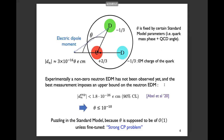For the proton EDM case, there is a similar bound, but the proton EDM is much harder to measure compared with the neutron EDM, so the bound is weaker.